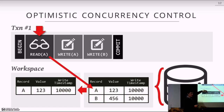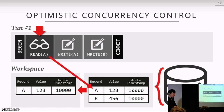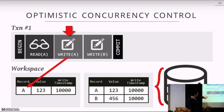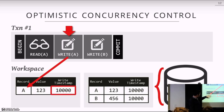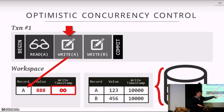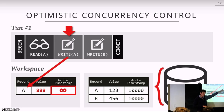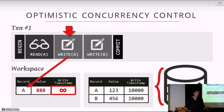When we do a write on A, since we already have it in our workspace, we do the write there. When we modify the value, we change its write timestamp to infinity — one key difference between MVCC and OCC is that in MVCC you get a timestamp at the beginning, but in OCC you get a timestamp at the end. So we put infinity as a placeholder. For the write on B, it's not in our workspace yet, so we copy it, update the value, and set the write timestamp to infinity.